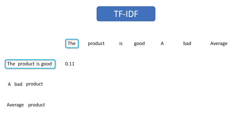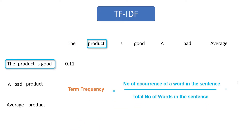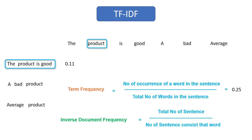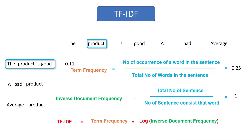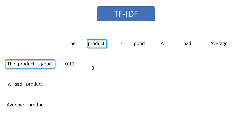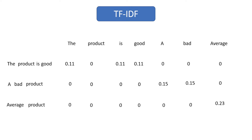Now let's do the same thing for the word 'product'. The number of occurrences is 1 and the total number of words is 4, so term frequency is 0.25. For inverse document frequency, total sentences are 3 and the number of sentences containing 'product' is also 3. Log of 1 will always be 0, and if you multiply anything with 0 the result is 0. So the TF-IDF score for 'product' is 0. If we do the same for all remaining words, we get the final output.